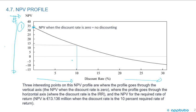The second point is where we're using a discount rate of 10%. At a discount rate of 10%, we have a net present value of 13.136 million. We can see it's under 15 — that is 13.136.